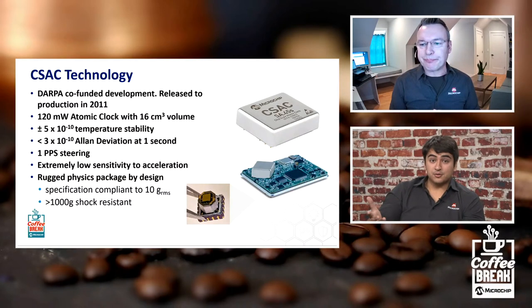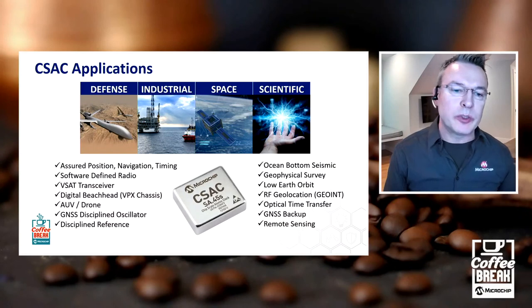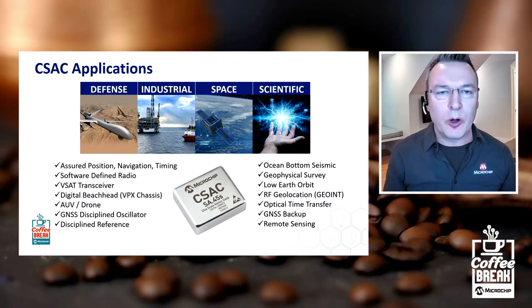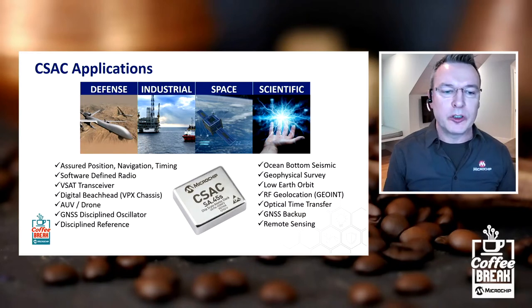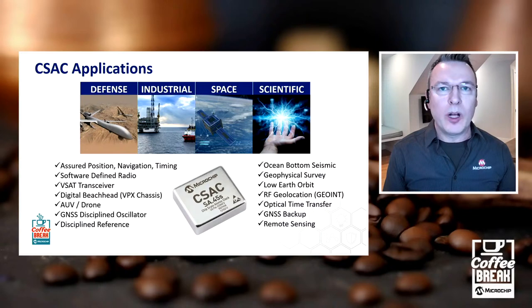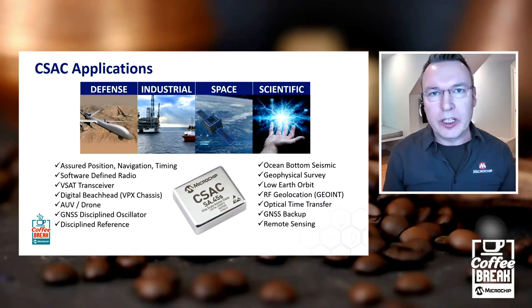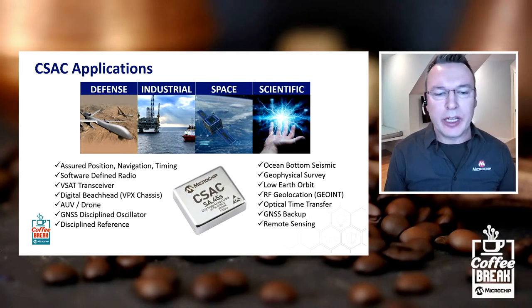What sort of applications and industries do we see CSACs being used in today? The first application envisioned for CSAC was assured position, navigation, and timing. Initially when DARPA was involved, the vision was to have a super low-powered atomic oscillator for military systems when GPS was unavailable, denied, spoofed, or jammed. You'll see the acronym 'assured PNT' associated with CSAC as a high-performance oscillator to give you local time on a vehicle, a soldier's backpack, a plane, or a drone when you need a local clock to navigate and complete the mission.